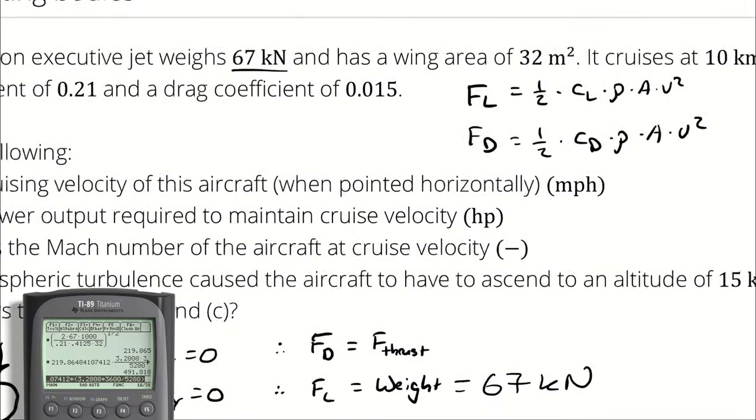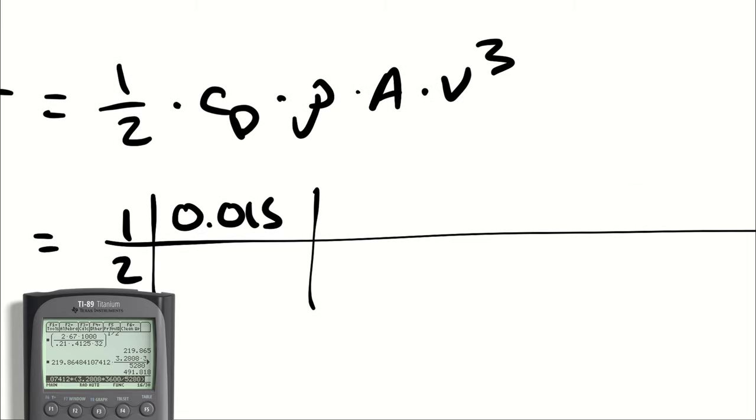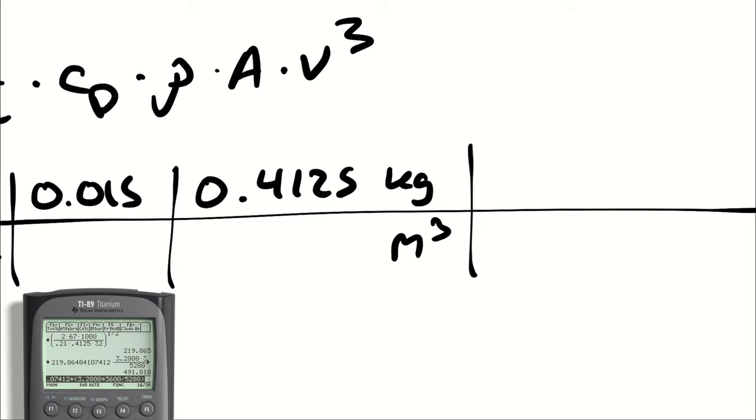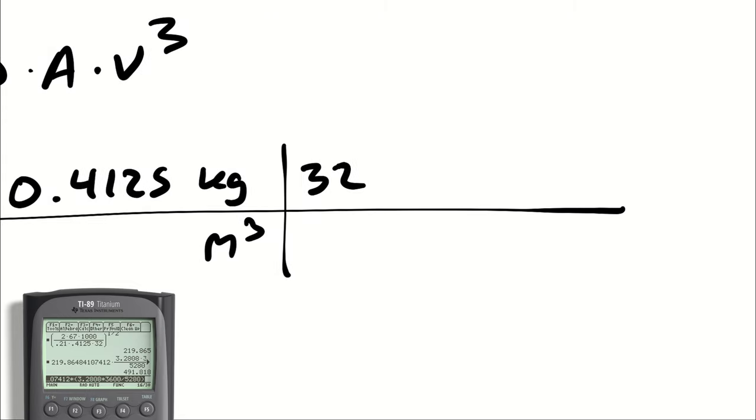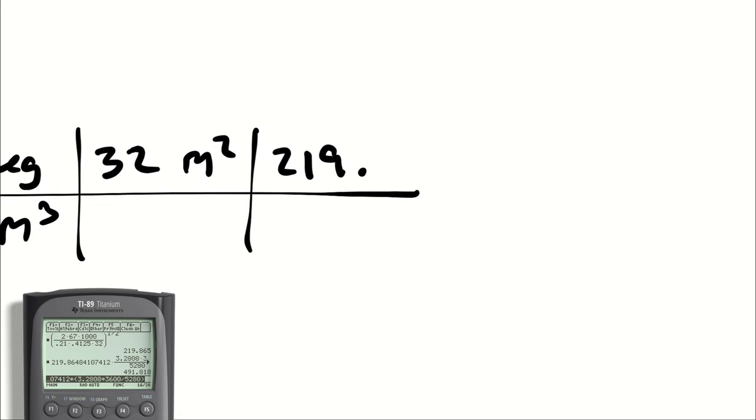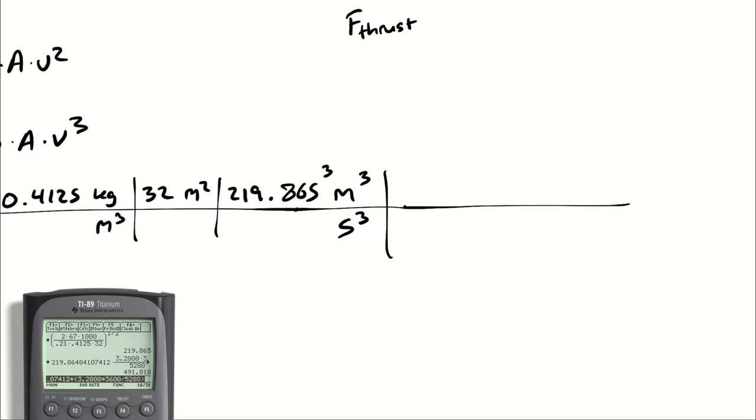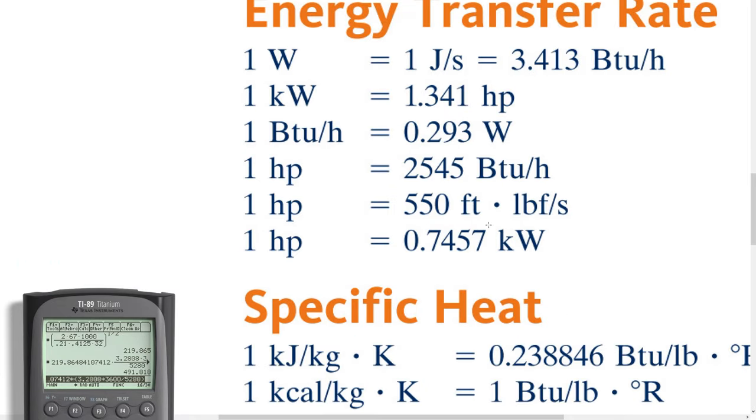The coefficient of drag was given as 0.015. We are using the same density as earlier, 0.4125. Then our area is the same because that's how the coefficient of lift and coefficient of drag are generated for an airfoil. Our velocity was 219.865 meters per second, and I'm going to cube everything. Naturally I want this answer in horsepower, so I have to convert from metric to imperial once again.